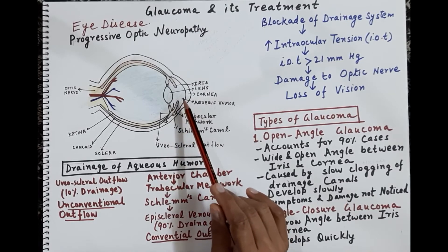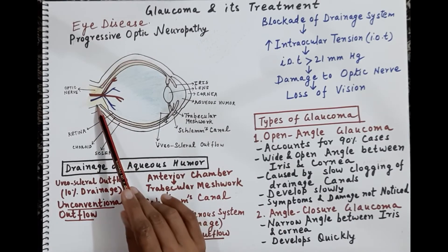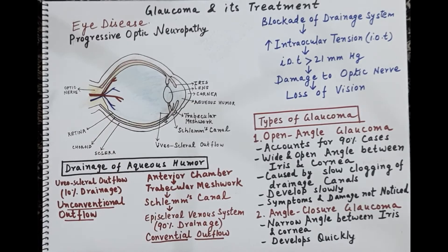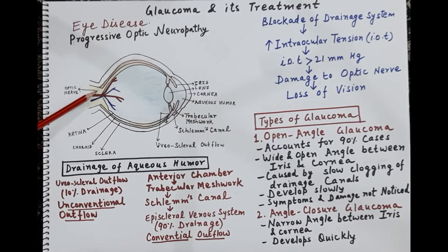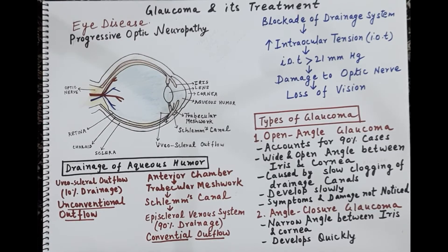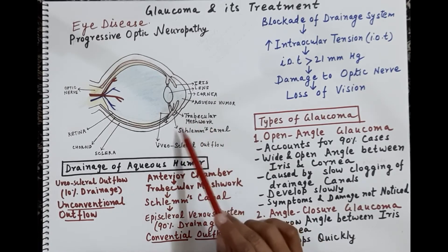Because of the increase in intraocular tension, pressure also falls on the optic nerve — shown here in yellow — which conveys messages from the eye to the brain, allowing us to see. The accumulated aqueous humor increases intraocular pressure, which compresses the optic nerve, causing progressive damage that can result in progressive loss of vision and blindness.